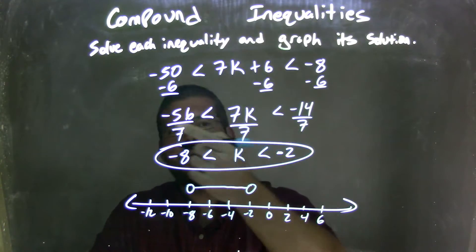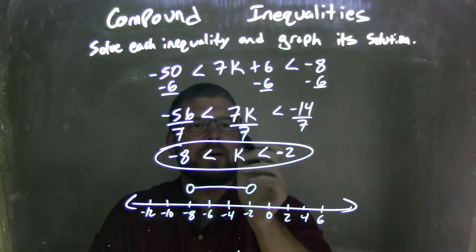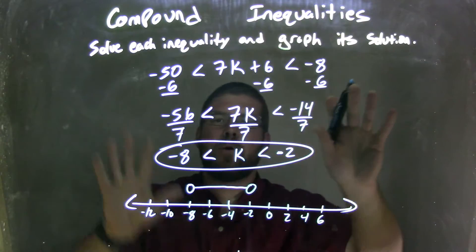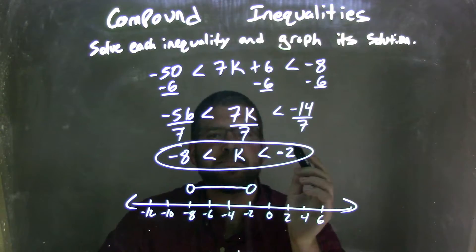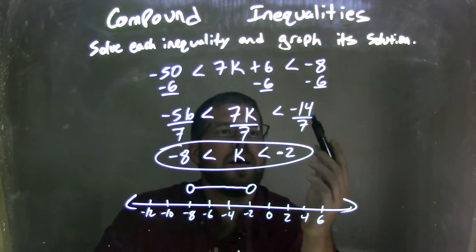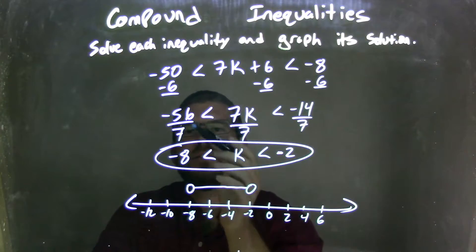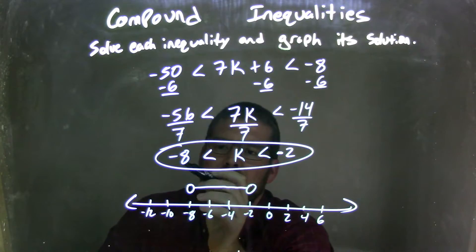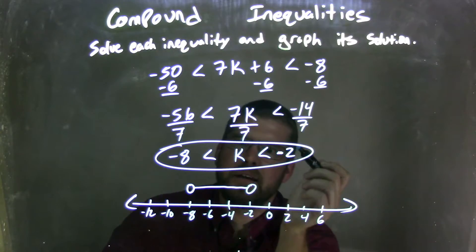Then divide by 7 to all parts again — make sure you do that. When you divide by 7, you have to do it on both the left and right side. That gives me k in the middle, negative 14 divided by 7 is negative 2 on the right, and negative 56 divided by 7 is negative 8 on the left. So now we have negative 8 is less than k, which is less than negative 2.